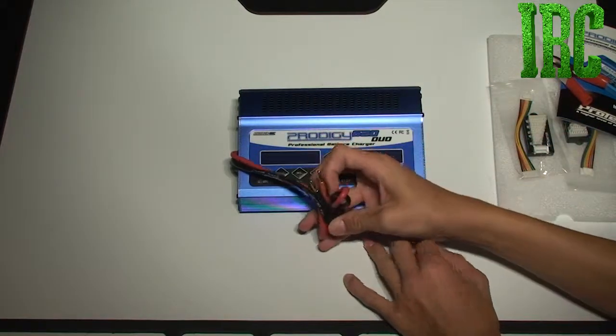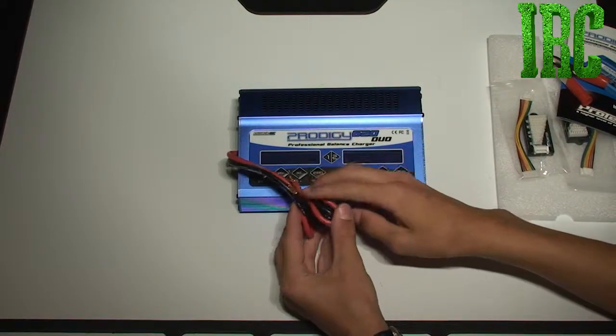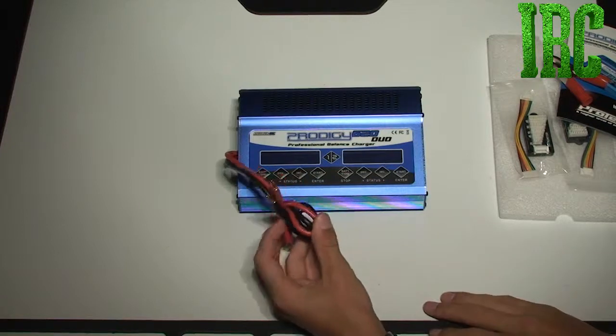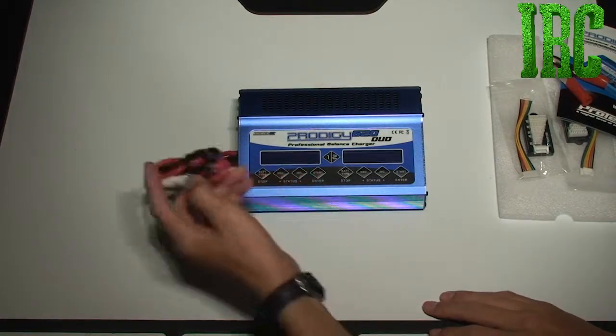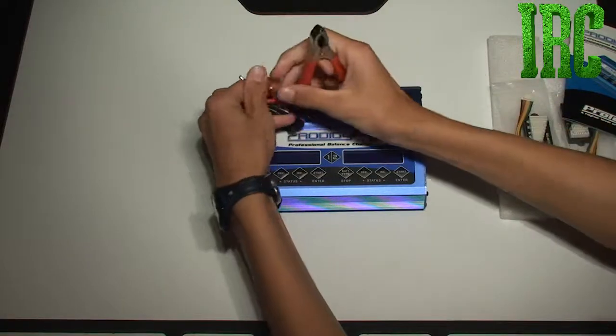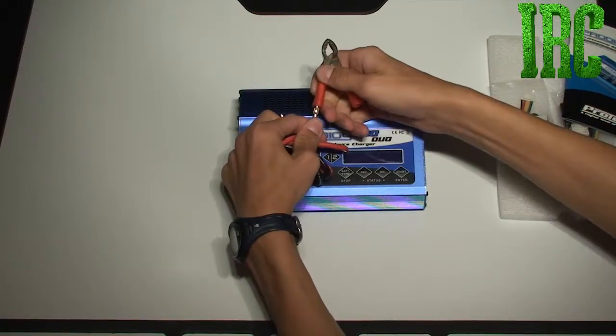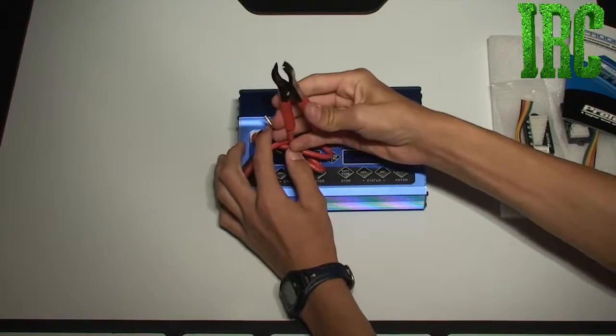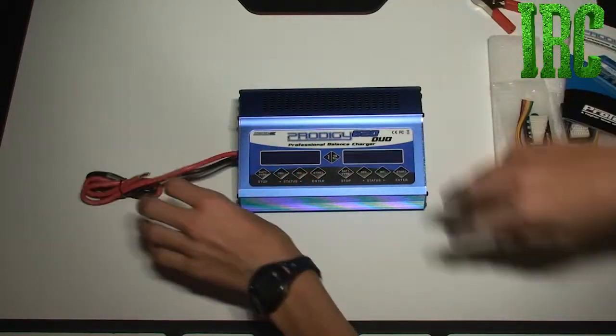Right here you have your DC banana plugs that you'll be plugging into your power supply, or you can attach them right onto your clips like this and then attach that to your car battery. That's a very nice feature.